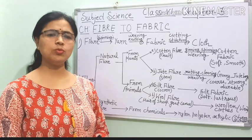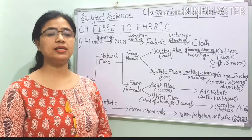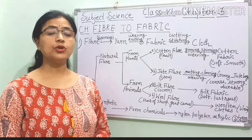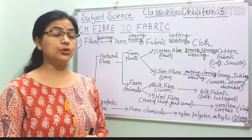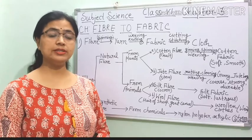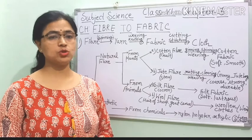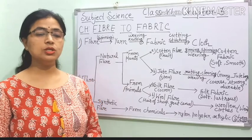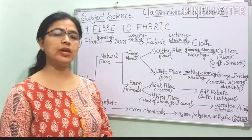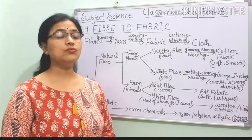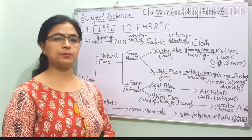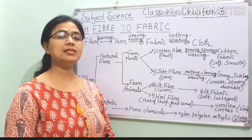At home only, you can see that your mama, your papa, you and your brother and sister — they all have different types of clothes. So in this way, you can easily do the activity of the Fibre to Fabric chapter.